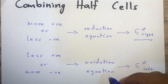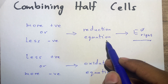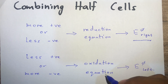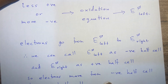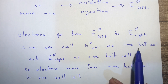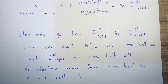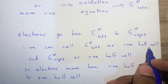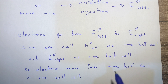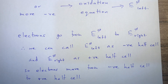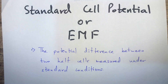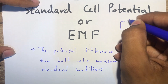Oxidation occurs at E°left, so there is a loss of electrons, whereas at E°right there is a gain of electrons. So electrons flow from E°left to E°right. Since electrons always flow from the negative terminal to the positive terminal, E°left is the negative half cell and E°right is the positive half cell. Therefore, the voltmeter terminal connected to E°left is the negative terminal, and the terminal connected to E°right is the positive terminal.